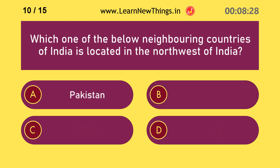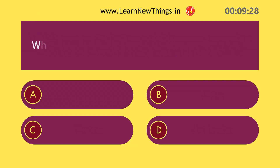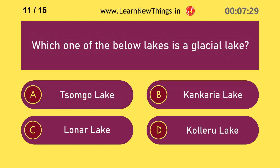Which one of the following neighboring countries of India is located in the northwest of India? Pakistan. Which one of the following lakes is a glacial lake? Tsomgo Lake.